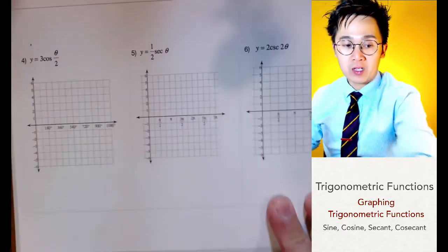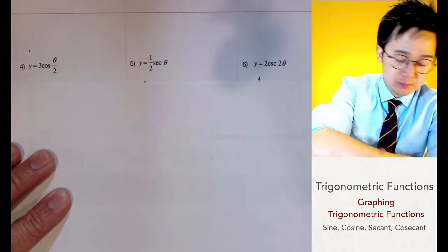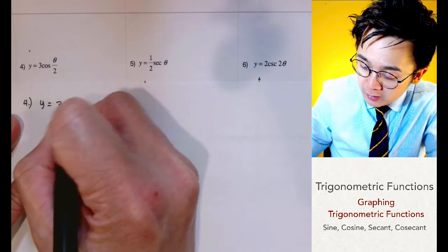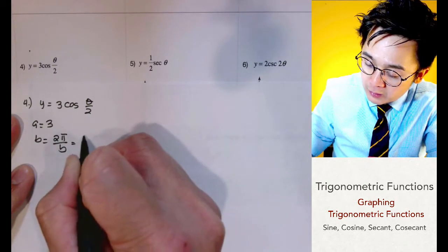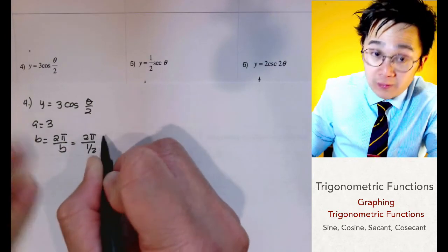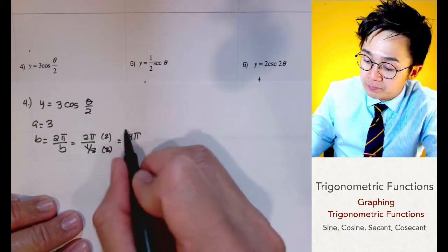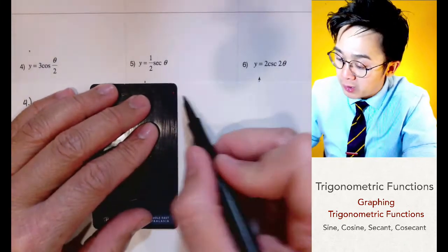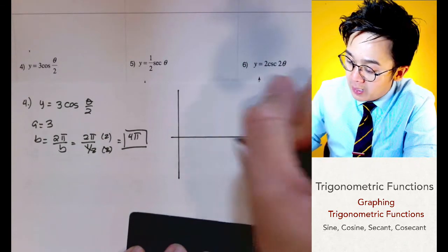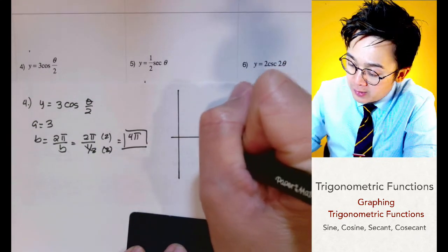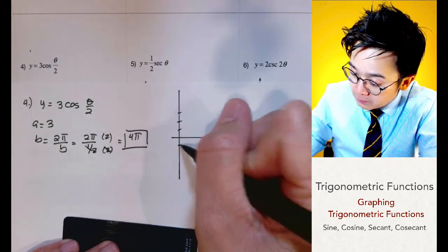For problem number four, we graph y equals 3 cosine pi over 2. Here a equals 3, and the period is two pi over one-half. Multiplying both sides by 2 gives us 4 pi for the period. Since 4 pi divides evenly, we use radian measure: half of 4 pi is 2 pi, half of that is pi, and pi plus 2 pi is 3 pi. The height is 3.